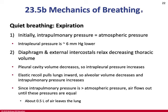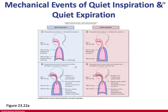When breathing out, diaphragm and external intercostals relax, decreasing thoracic volume. Pleural cavity volume decreases, so intrapleural pressure increases. Elastic recoil pulls the lungs in, alveolar volume decreases, and intrapulmonary pressure rises above atmospheric — pushing air out. At all times, there is a pressure differential between the thoracic cavity and inside the lungs that keeps them inflated, whether breathing in or out.